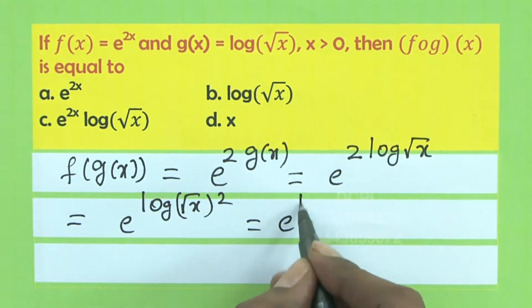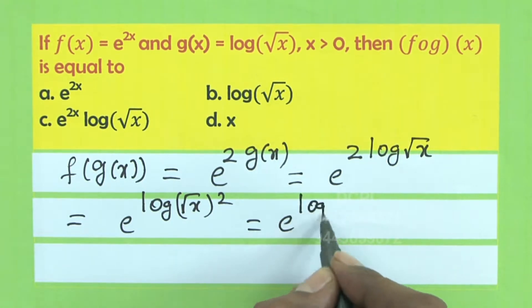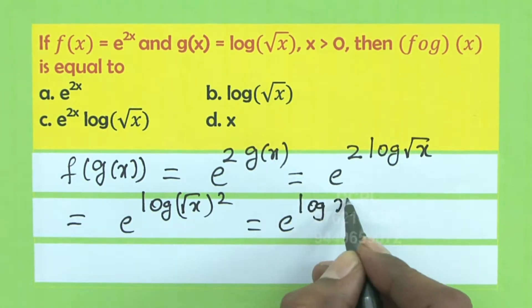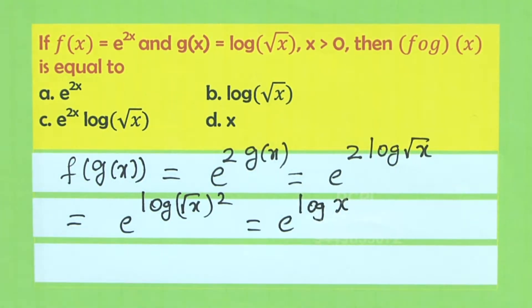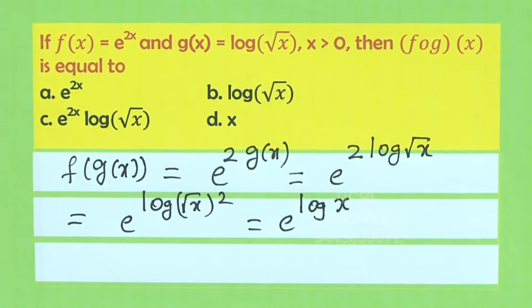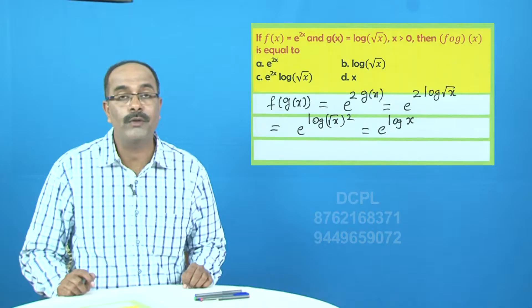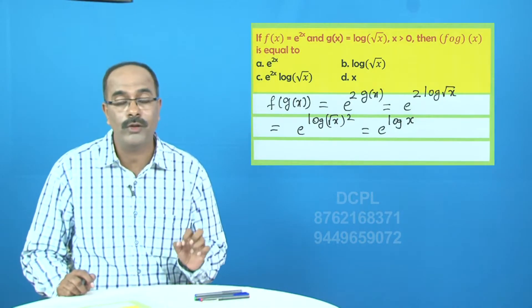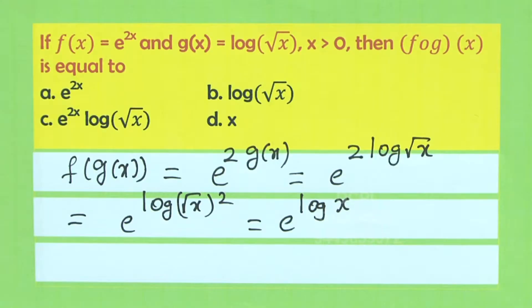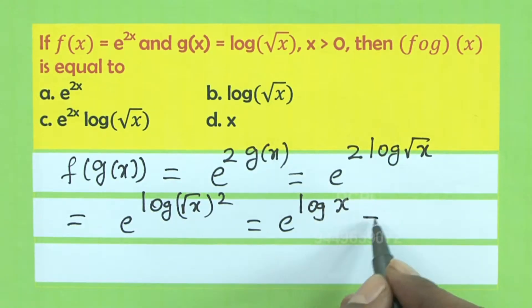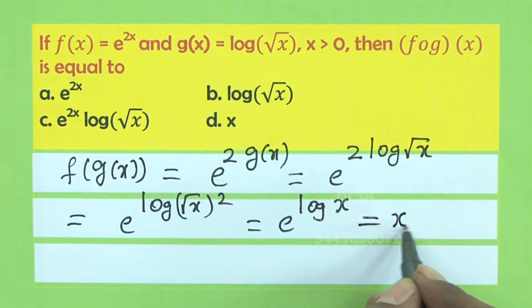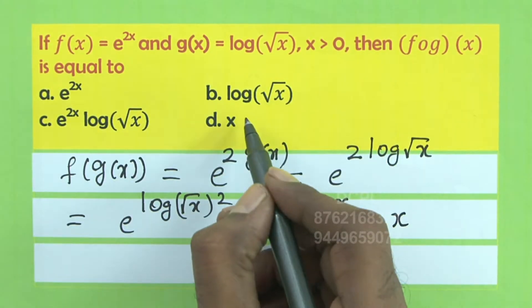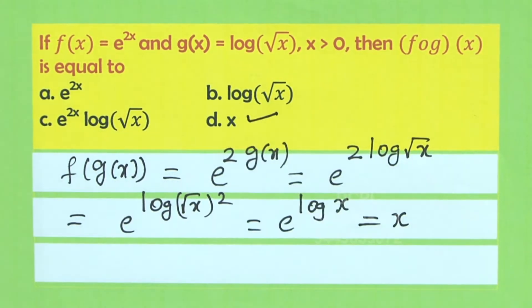The square and root cancel, giving e^(log x). And e^(log x) = x. Therefore option D is correct.